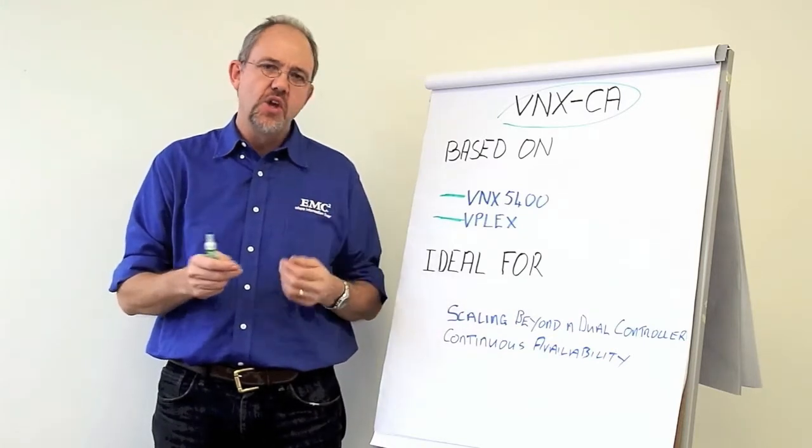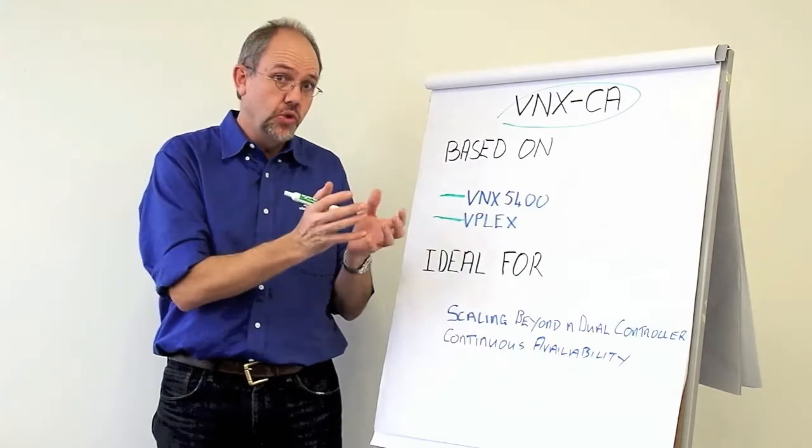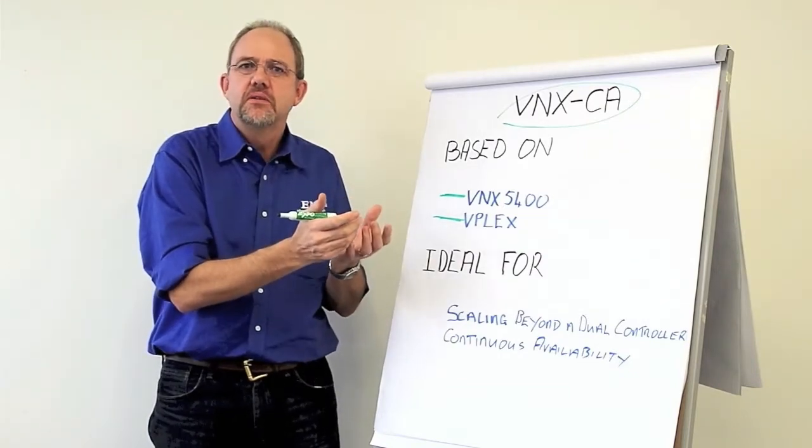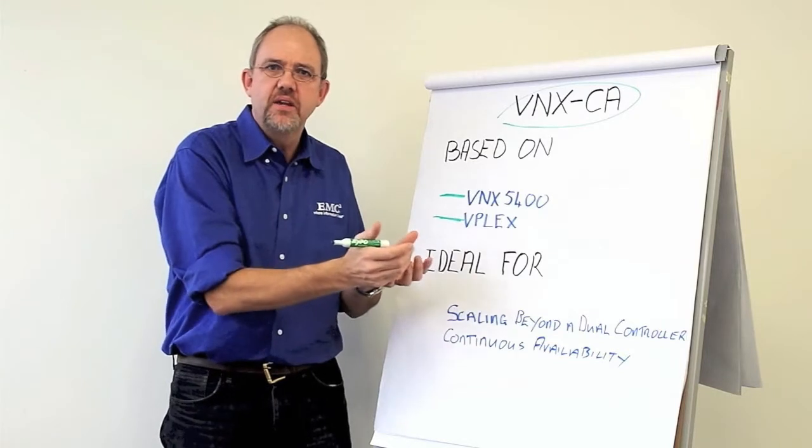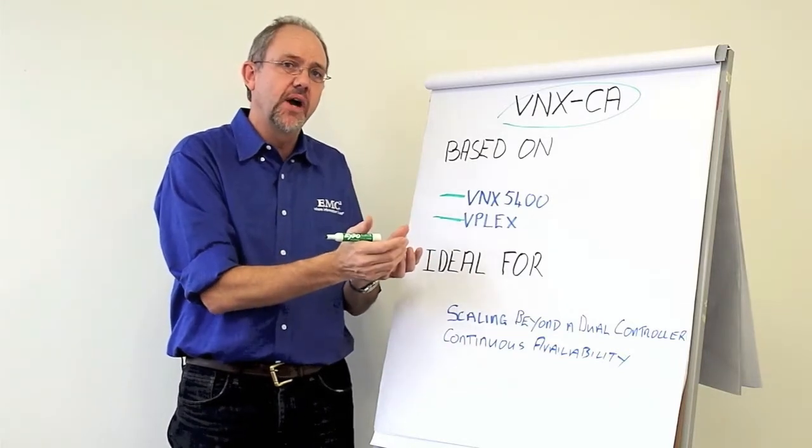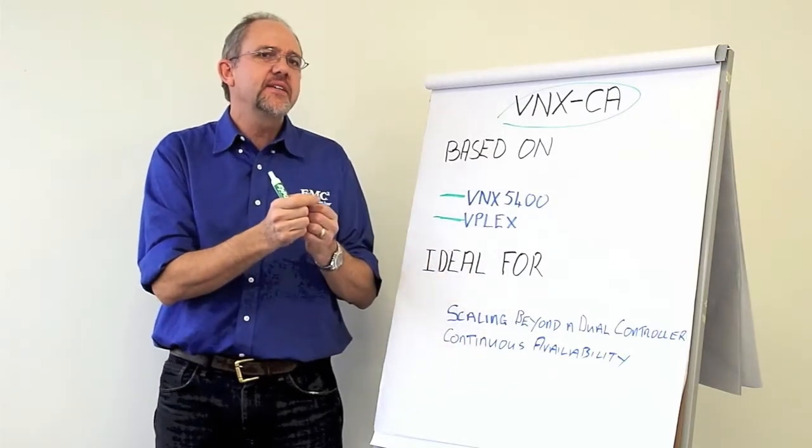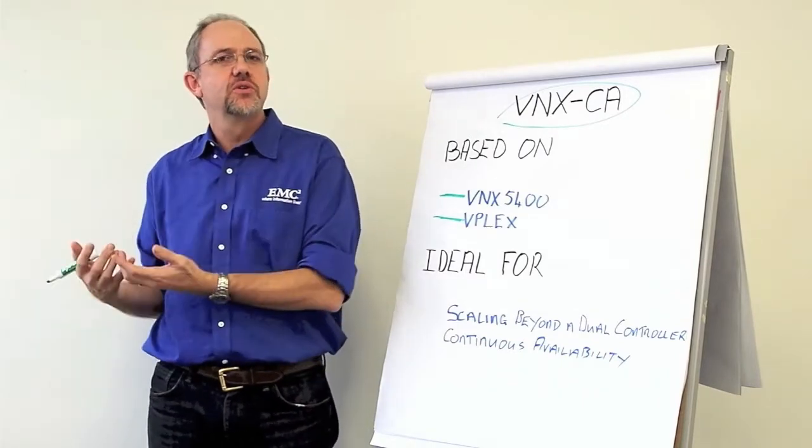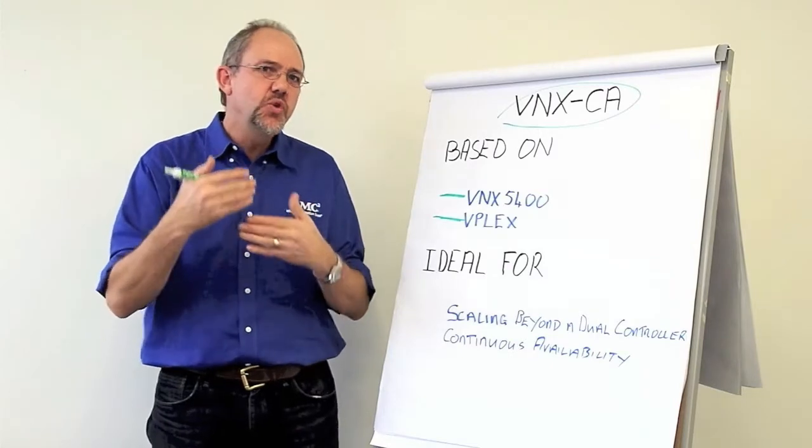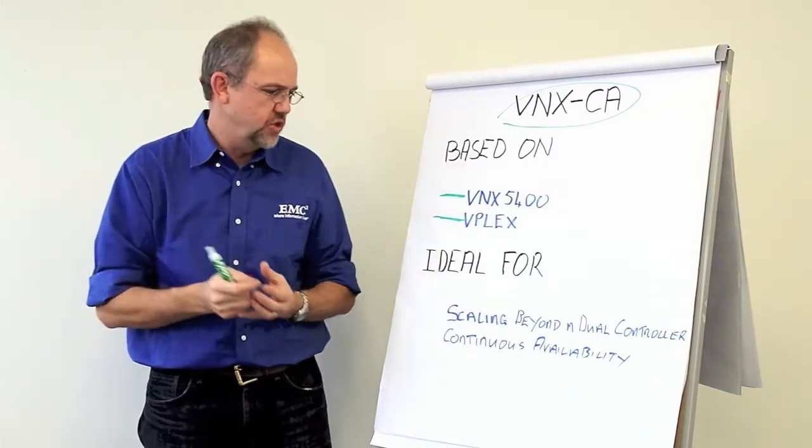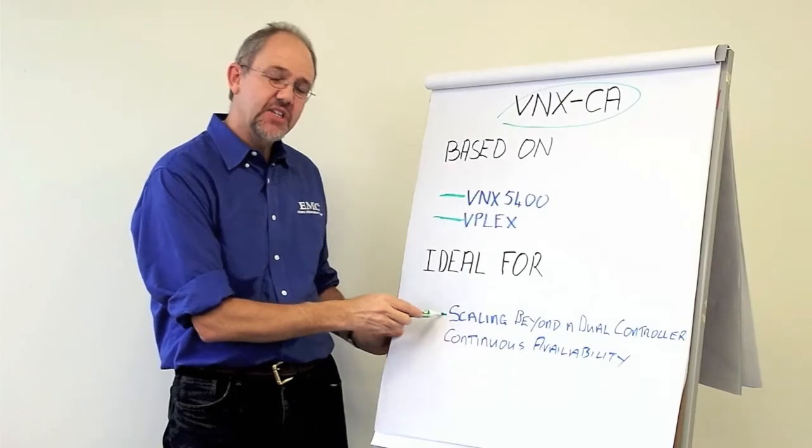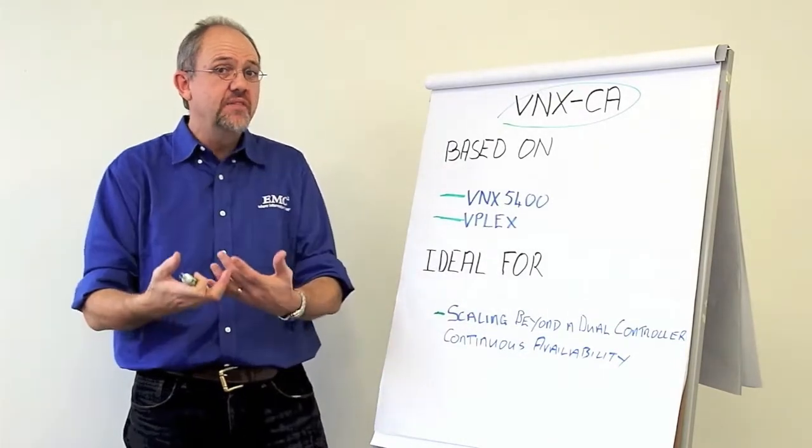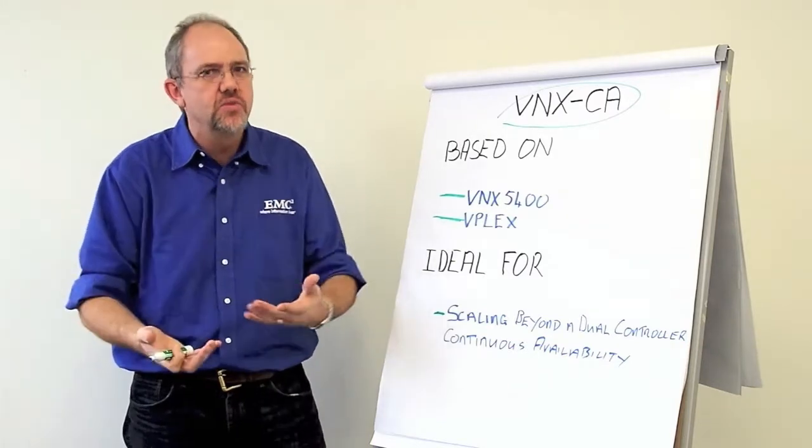The VNX CA comes in two flavors. You've got the VNX CA2 which consists of one dual storage processor or storage controller in the likes of a VNX 5400. And the VNX CA4 adds two dual storage controllers. So, it really has two VNX 5400s in one solution. You can now scale beyond a dual controller architecture for additional availability or really continuous availability.